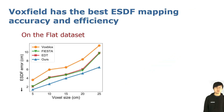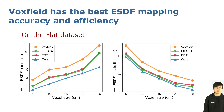Next, we evaluate Vox Field's ESDF mapping module. The vertical axis represents ESDF error. By avoiding the polyline and discretization error, our Vox Field shown in blue achieves the best ESDF mapping accuracy. Meanwhile, as shown in the right figure, Vox Field has the fastest ESDF updating speed among the compared methods. Similar results can also be seen on the other three datasets.